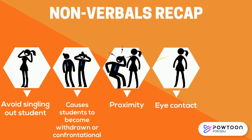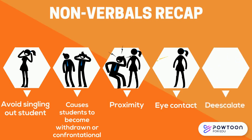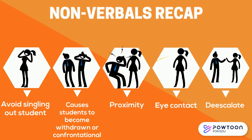If you do end up needing to verbally address a student, make sure to do it quietly and one-on-one. If the situation is starting to get out of hand and you need to de-escalate, start by talking with the student in an isolated part of the classroom or hallway. Let them express their frustration, calmly tell them your side of the story, and then come up with a solution together.